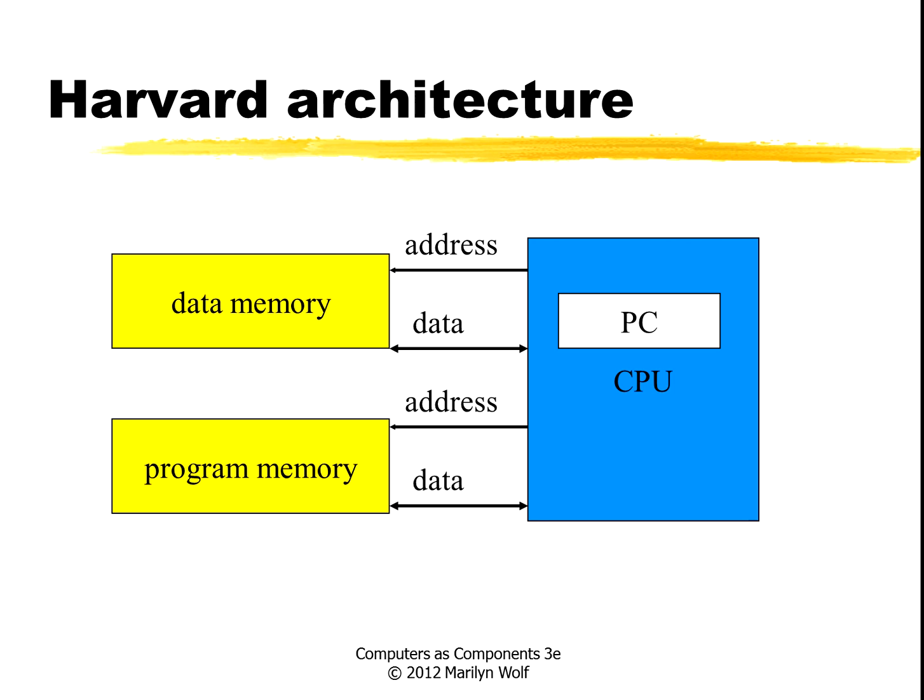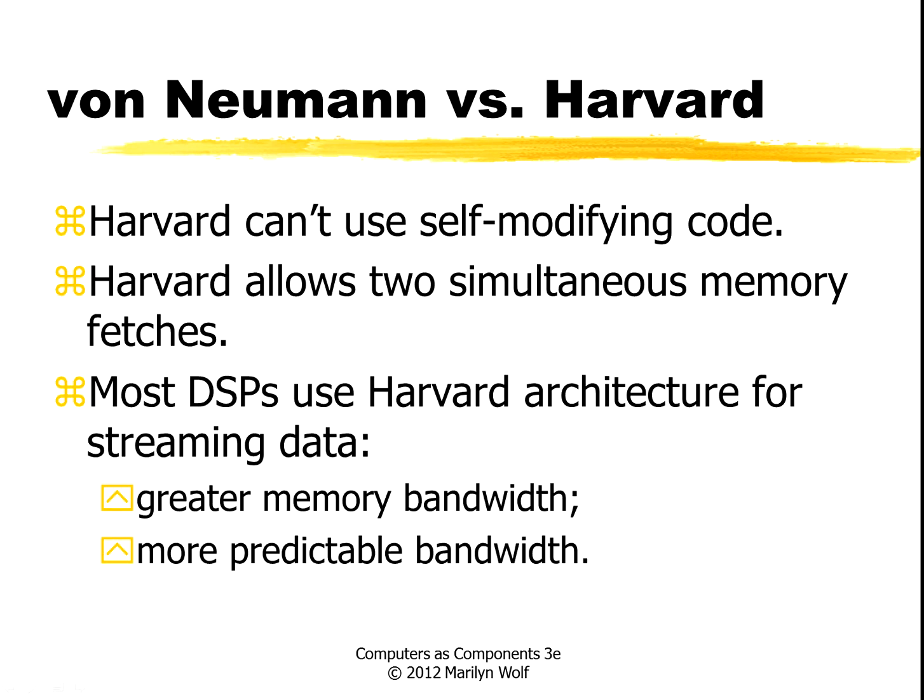A variation on this is the Harvard architecture, in which the CPU is connected to two different memories — one for data memory and one for program. Each of them has address and data buses. In the Harvard machine, because the program and data are separate, we can't do what's called self-modifying code.